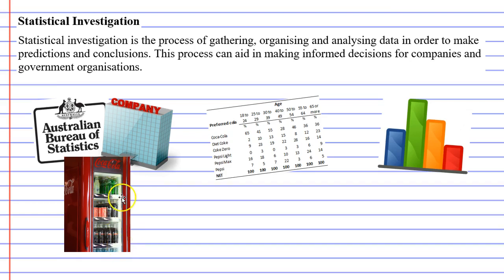What they would do is firstly gather some data. They might pay telemarketers to call people up and find out what drink people prefer, or they might ask the shops they own which drinks are the most popular. Once they've gathered this data, they then need to organise it — perhaps into a table and displayed on a graph. Then they can analyse the data in order to make predictions and conclusions.